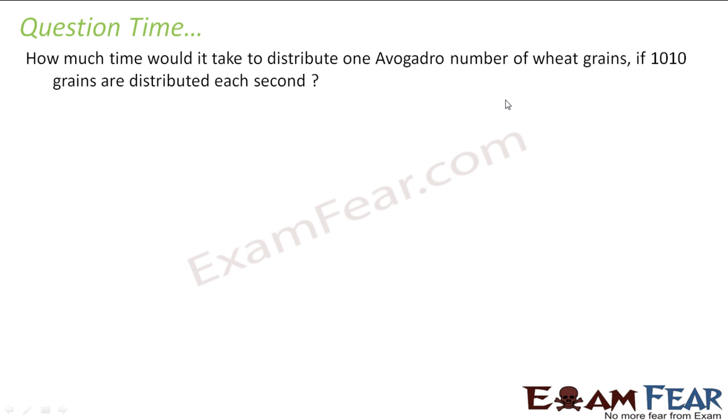So the question says, how much time it will take to distribute Avogadro number of wheat grains if 10 to the power 10 grains are distributed every second. Very simple math question actually. So one Avogadro number is nothing but 6.023 into 10 to the power 23.